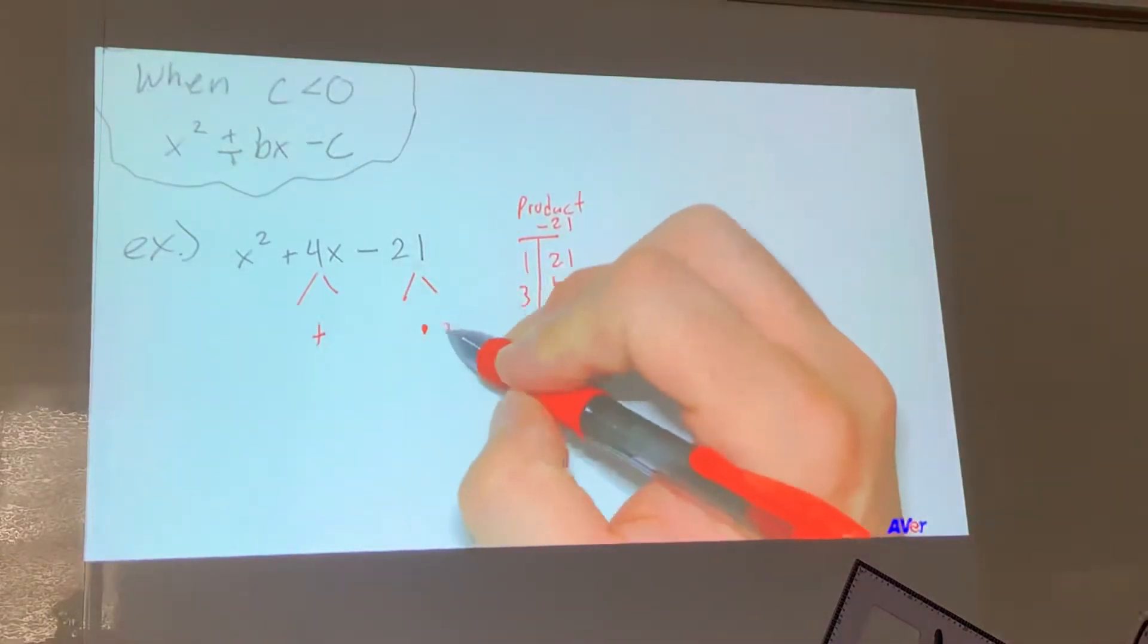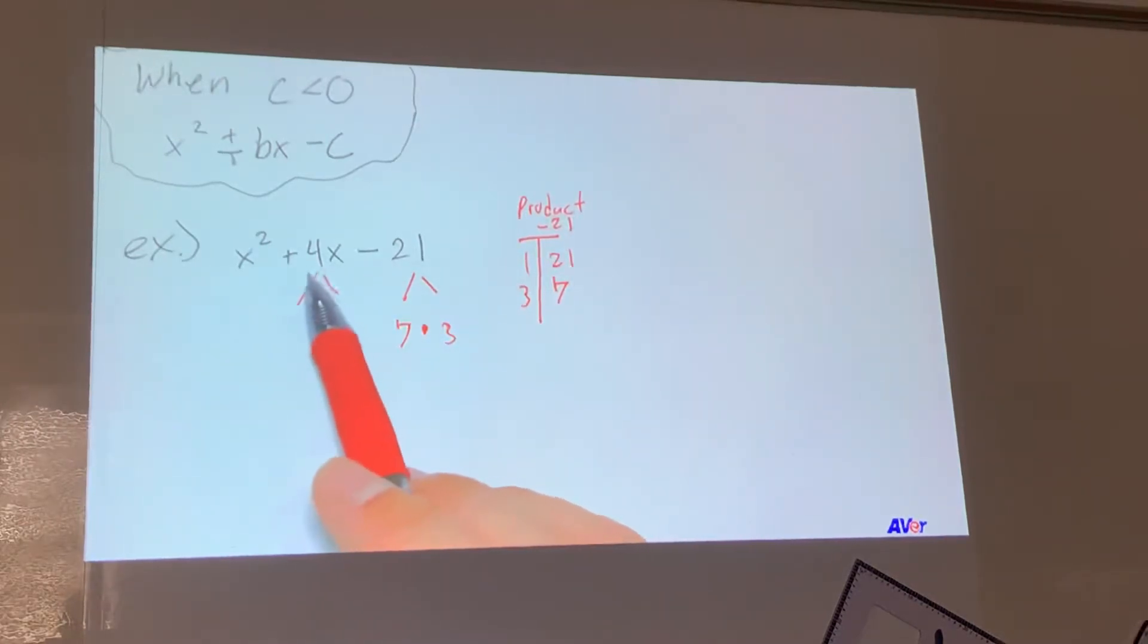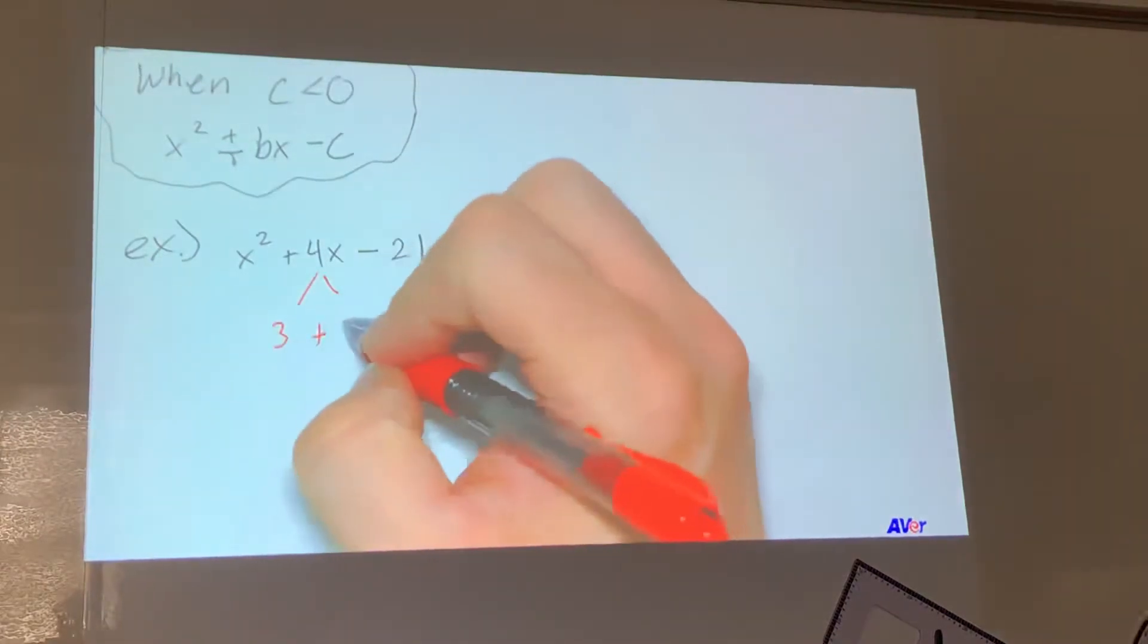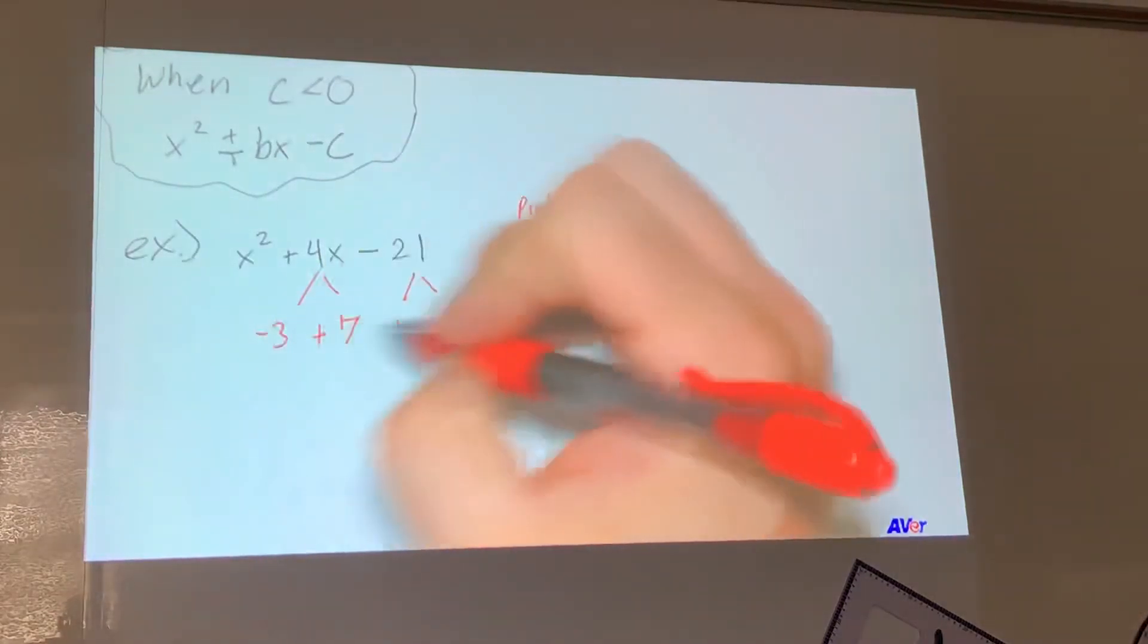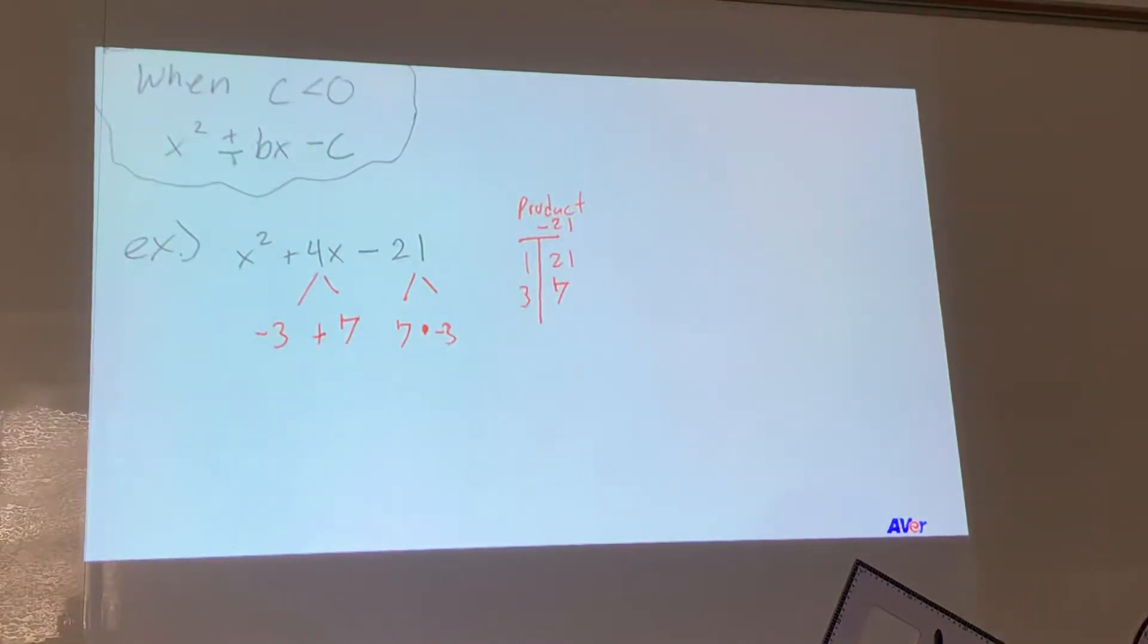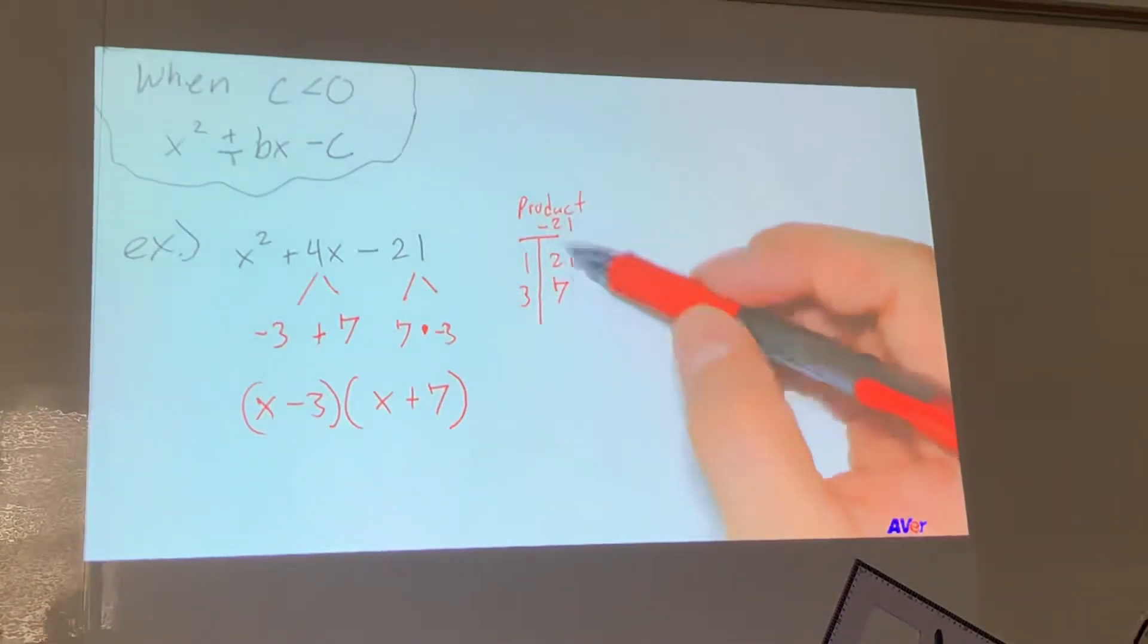Alright, so we know that this needs to be a 3 and a 7. The question is, which one should be negative? Alright, so to figure out which one's negative, we're going to look at this one. This one is positive, yes? So when we add 3 and 7, which one needs to be negative in order to get 4, positive 4x? The 3. The 3 needs to be negative. Does that make sense? If the 7 was negative, we'd still have negative 27, right? But the 4x would be a negative 4x. So these are our factors. And then we could break that into x minus 3 times x plus 7.